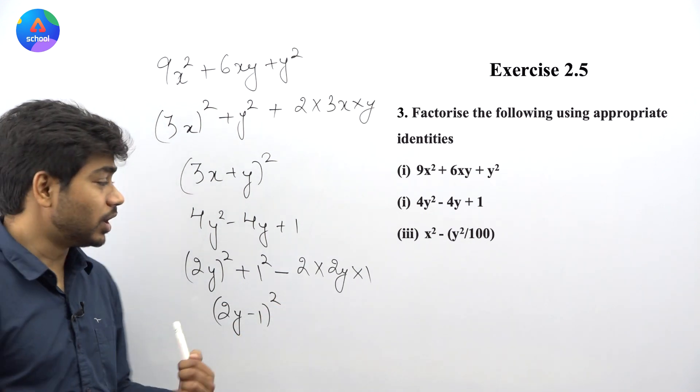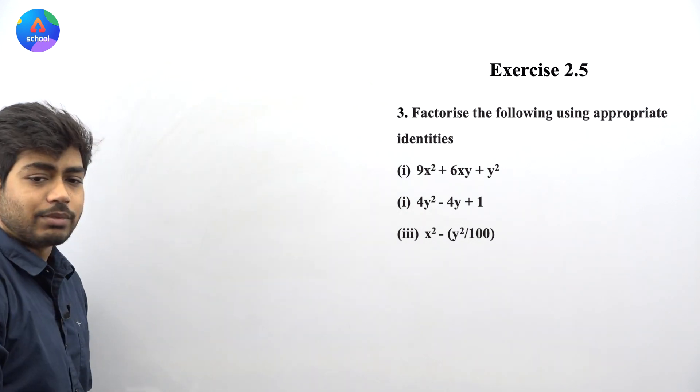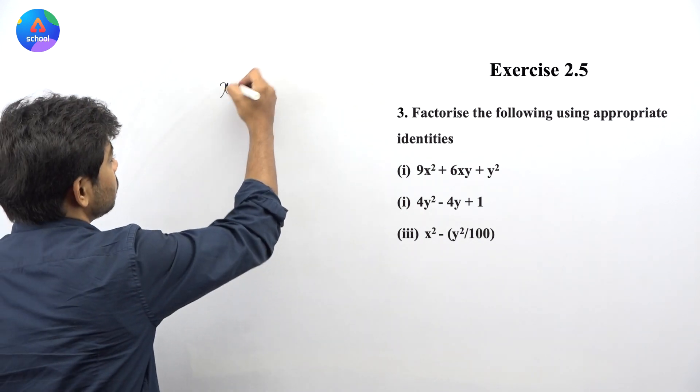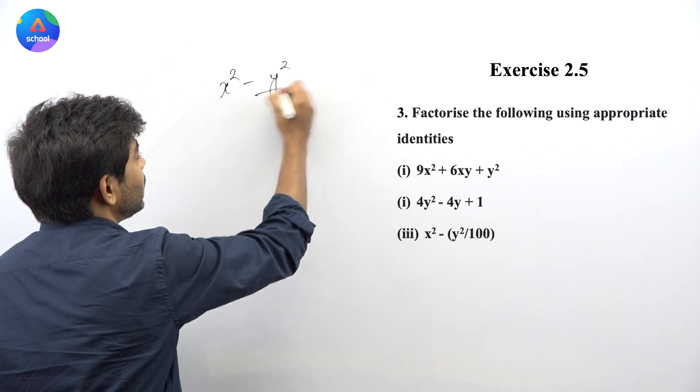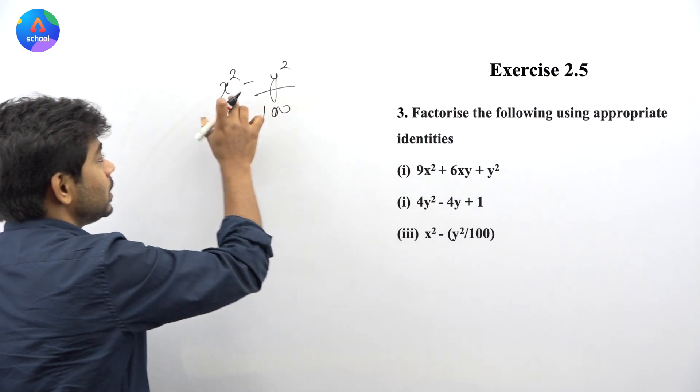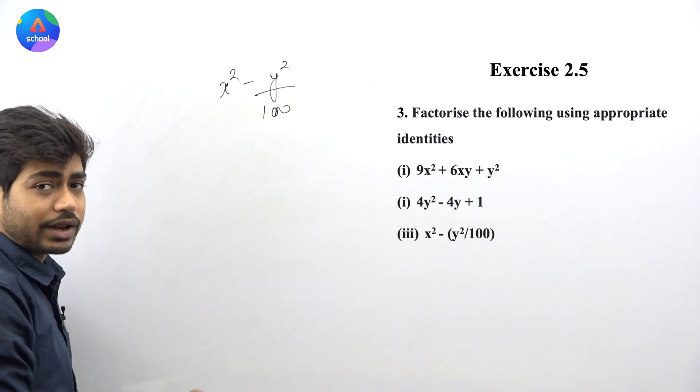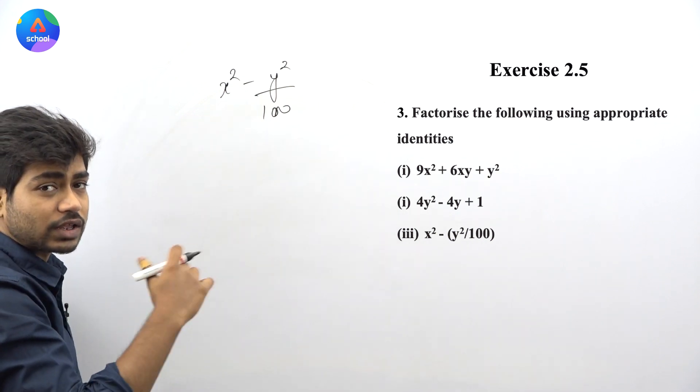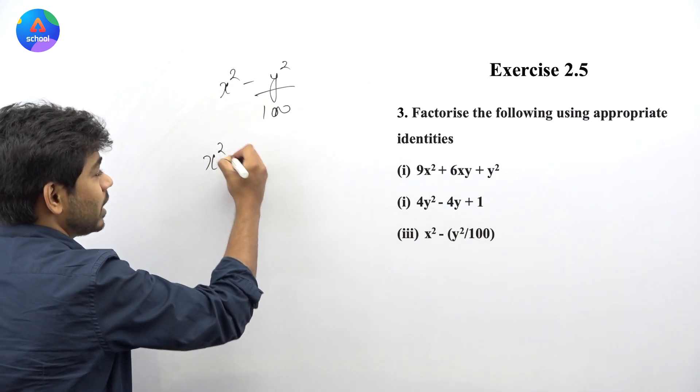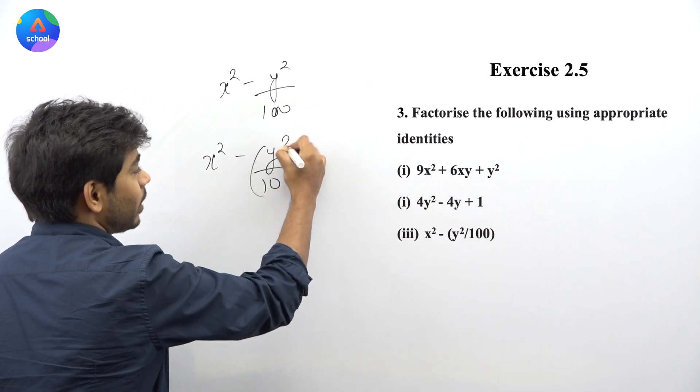Moving to the third part, we have x² - y²/100. This is a difference of squares. We can write this in the format a² - b² as x² minus (y/10)².